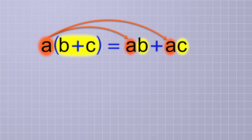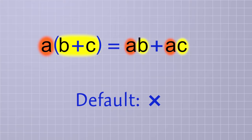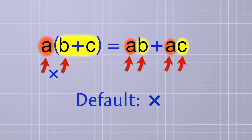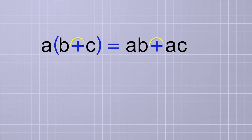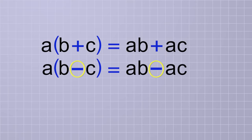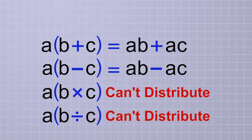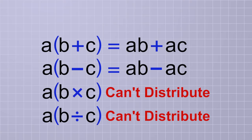And if you're looking at this thinking, what multiplication? Remember that multiplication is the default operation, which is why we don't have to show it in this pattern. Since the a is right next to the group, it means that it's being multiplied by the group. And on the other side, since the copies of the a are right next to the b and c, it means they're being multiplied also. And even though this pattern is usually shown with addition in the group, remember that it also works for subtraction since subtraction is the same as negative addition. But the distributive property does NOT apply to group members that are being multiplied or divided.